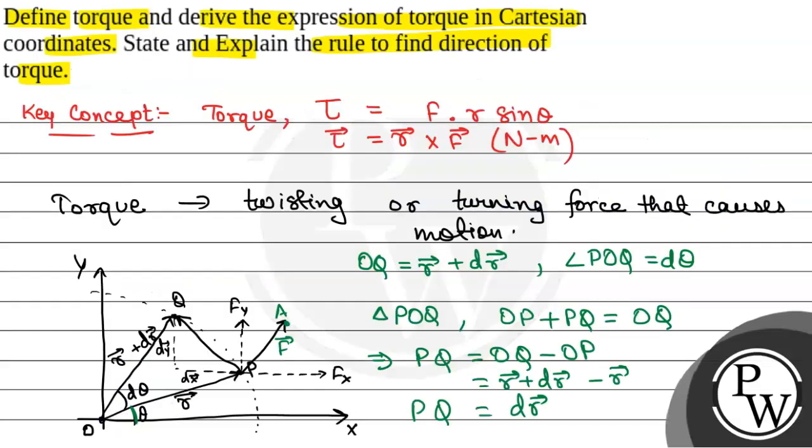Now the third part of the question is state and explain the rule to find direction of torque. So the rule to find direction of torque is right hand thumb rule, or right hand grip rule. In this, what happens is that if the hand is curled around the axis of rotation.